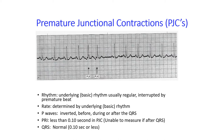PJCs can occur as couplets or in patterns such as bigeminy, trigeminy, or quadrigeminy, as discussed with PACs. It is common to describe frequency as rare (1–3 per minute), occasional (3–6 per minute), or frequent (greater than 6 per minute). Three PJCs in a row constitute a junctional rhythm. PJCs are the least common premature beats. Note that low atrial PACs can also present with an inverted P wave, but will not have a short PR.